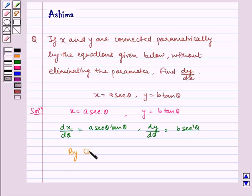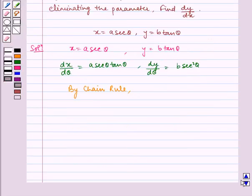By chain rule, we have dy by dx is equal to dy by d theta multiplied by d theta by dx.